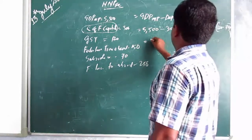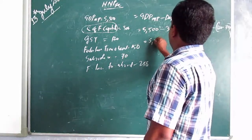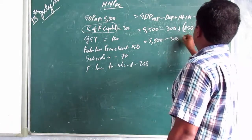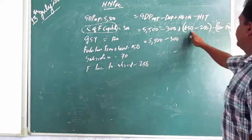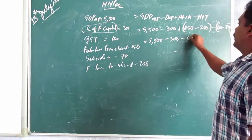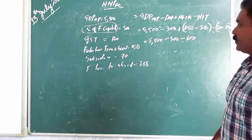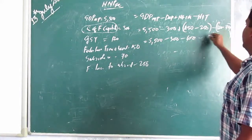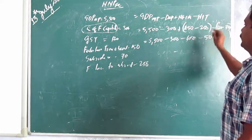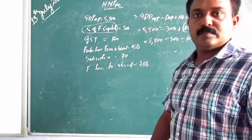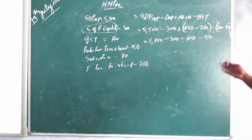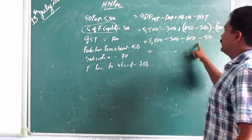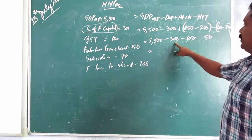Now calculating: 5500 minus 300, then minus 100 for NFIA (150 - 250 = -100), then minus NIT of 50 (120 - 70 = 50). Adding all subtractions: 300 + 100 + 50 = 450. So 5500 minus 450.